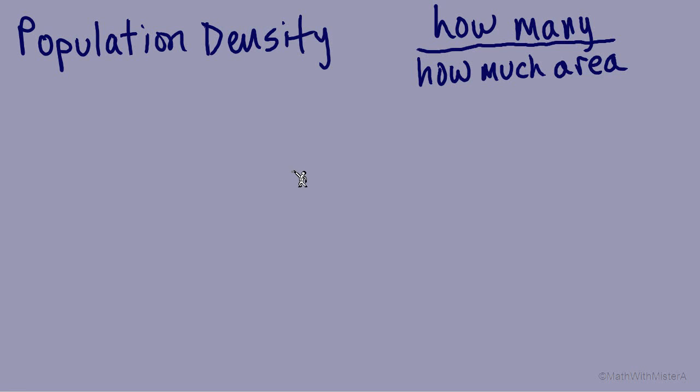Population density is a quantity that describes how crowded a place is. We come up with this quantity by a fraction that compares how many people to how much area those people are in.